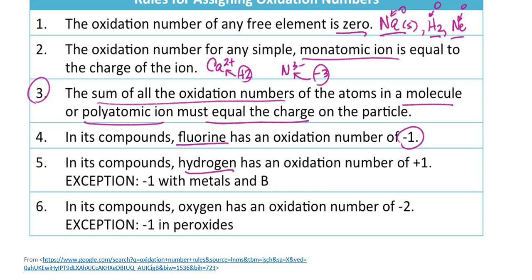Hydrogen tends to have a consistent oxidation number but it can vary. If hydrogen is bonded to non-metals, its oxidation number will be +1. But if hydrogen is paired with metals or with boron, then its oxidation number will be -1.